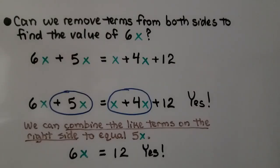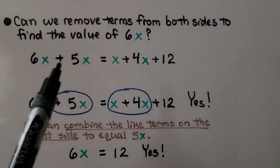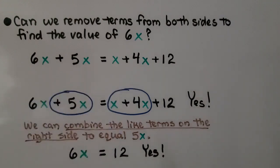Can we remove terms from both sides to find the value of 6x? I don't see a 6x on this side. I don't see a 4x on this side. I don't see a 5x on this side. Well,